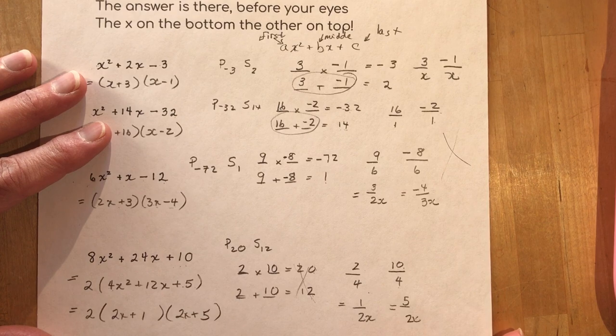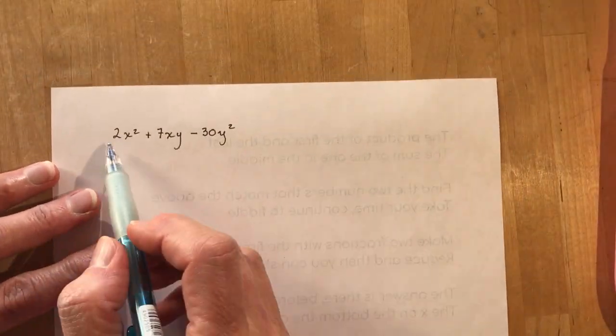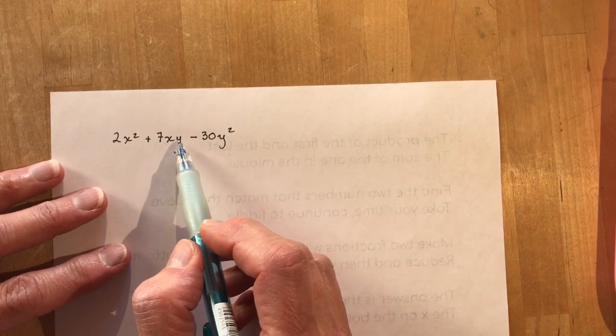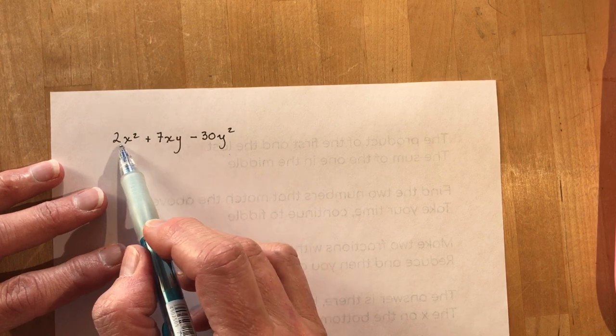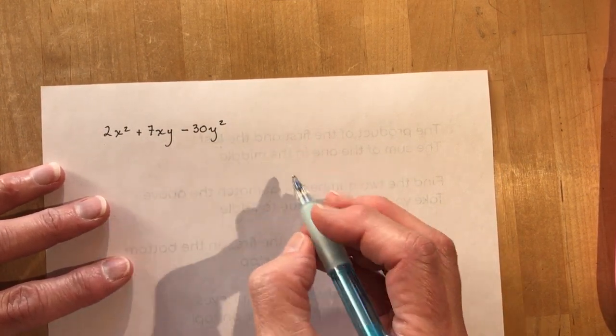Now the last one I'm going to show you is one where you have, this is one where people get confused because it's got x's and y's in it. Don't worry about the y's. Okay if there's a y here and a y squared here, an x squared and an x here, we're just going to handle those numbers, those variables at the end of this.